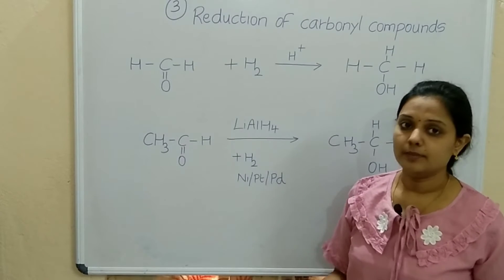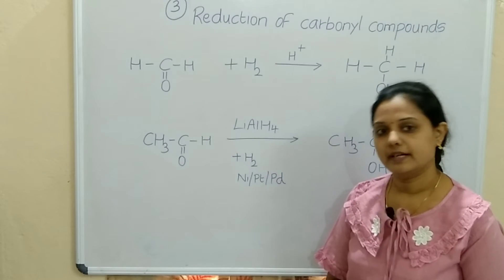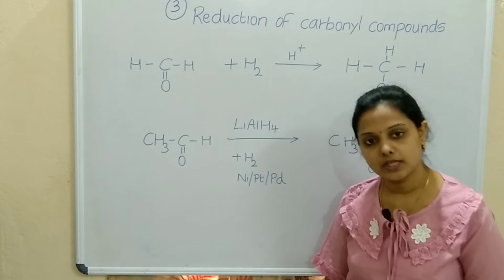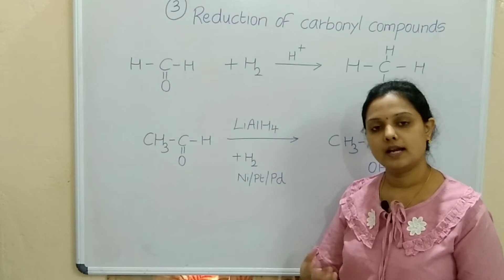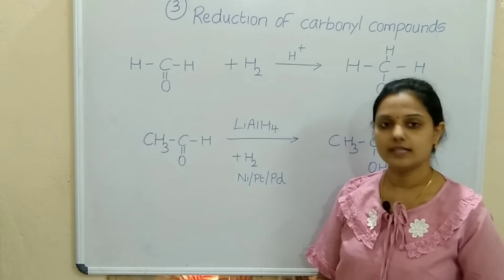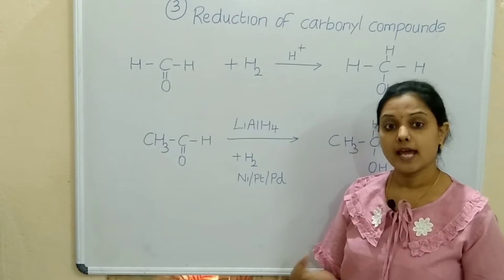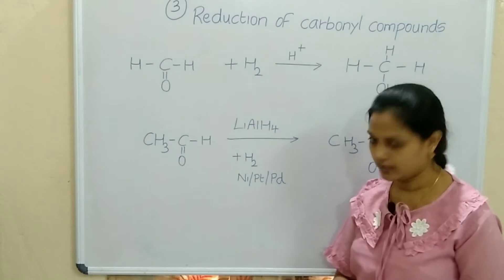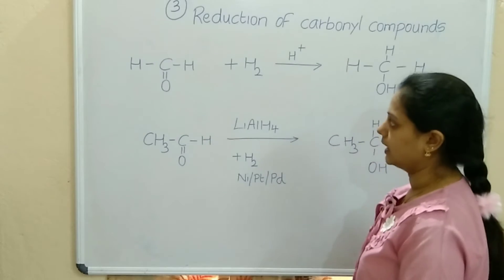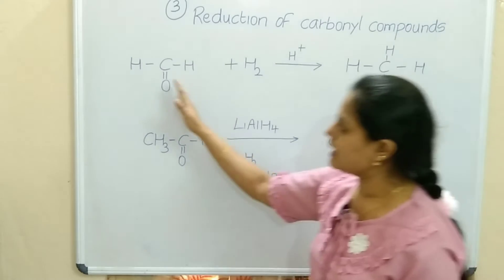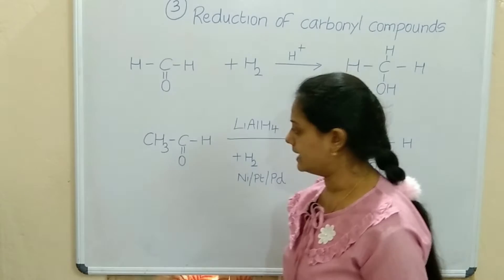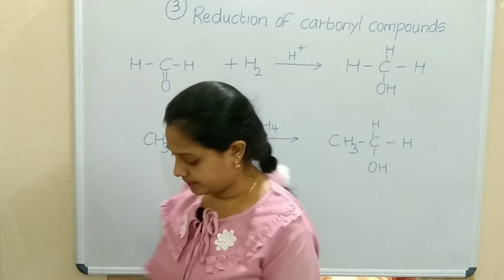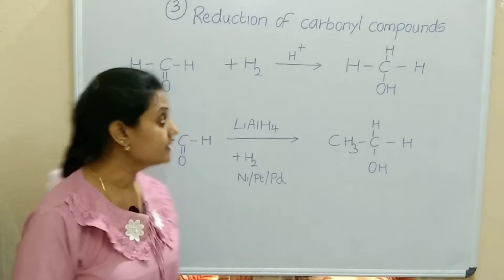The third preparation method is reduction of carbonyl compounds. Carbonyl compounds include aldehydes, ketones, and acyl chlorides — any compound where a C double bond O is found. We will take the example of aldehydes first, then move to ketones.